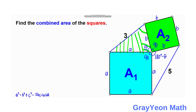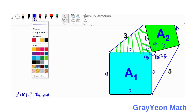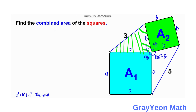Applying the cosine law to the first (green shaded) triangle, the side opposite theta is 3. So our first equation is: 3² = A² + B² − 2AB·cos(θ).